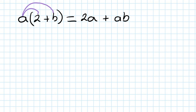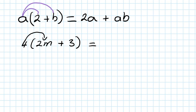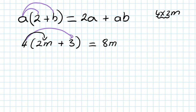So let's say 4, open bracket, 2m plus 3. First thing is 4 times 2m. So 4 times 2 is 8, so it's 8m. And then you go 4 times 3, so 4 times 3 is 12, which is plus 12. So that's how it works.